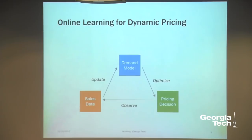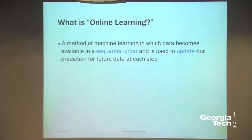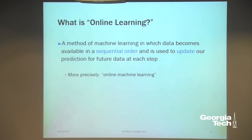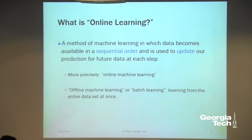In the extreme case, the cycle can happen after each customer transaction. The technique we're going to use in this data-driven approach is online learning. Online learning is an area in machine learning specifically designed to make decisions in a sequential order. This is also known as online machine learning. Compared to offline or batch learning — where we get all historical data and analyze it — in online learning, we don't have all the data at the beginning. We make decisions and data become available continuously, so we need to continuously include new information and use that to update our decisions.